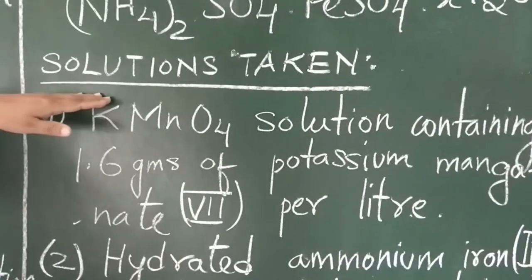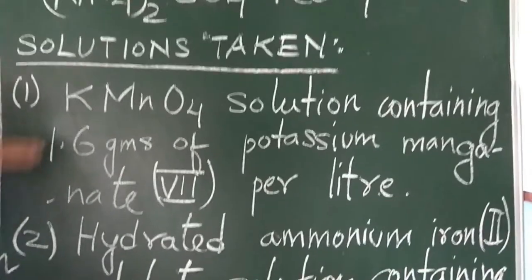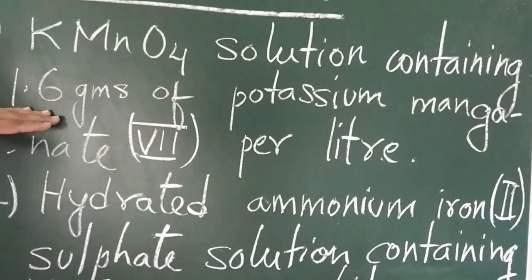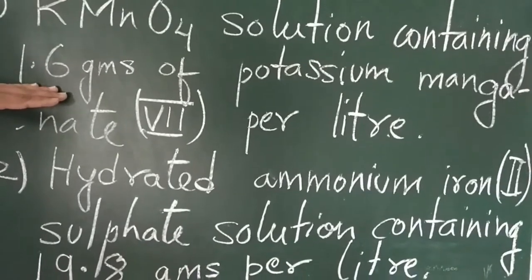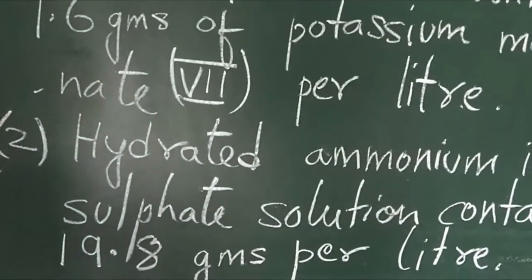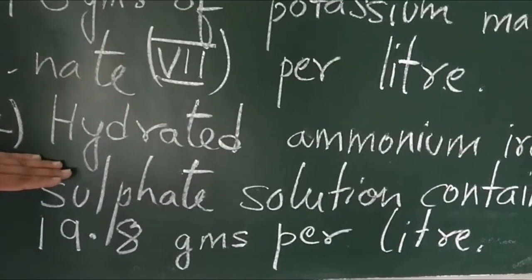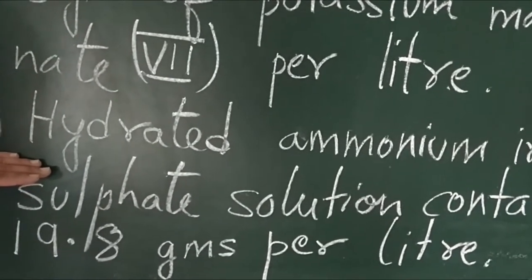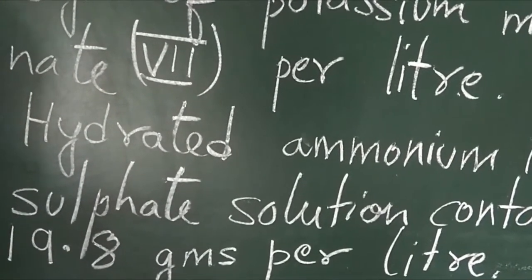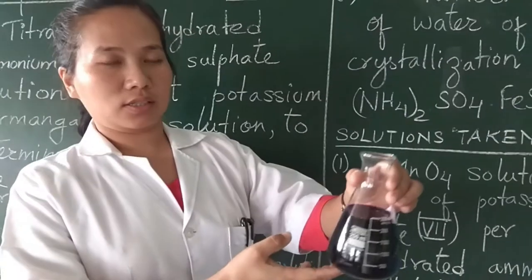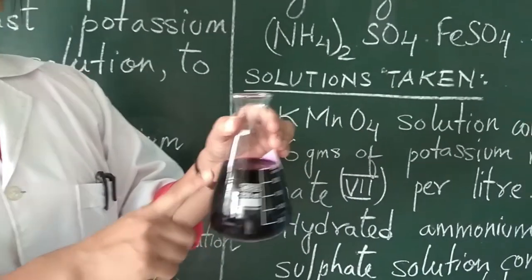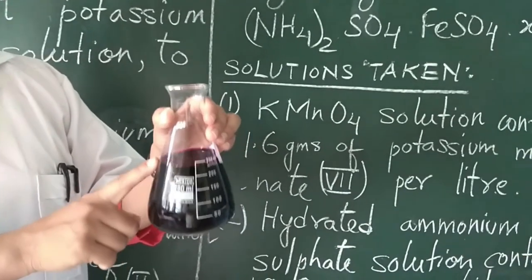The solutions taken for this experiment are: an aqueous solution of KMnO4 containing 1.6 grams of potassium permanganate per litre, and an aqueous solution of hydrated ammonium iron 2 sulfate containing 19.8 grams per litre. KMnO4 is an oxidizing agent and it is a self-indicator.